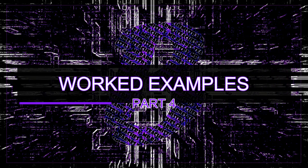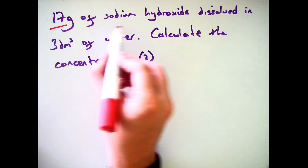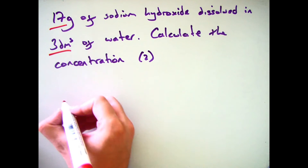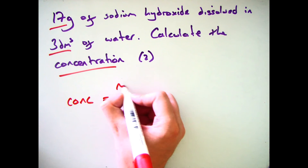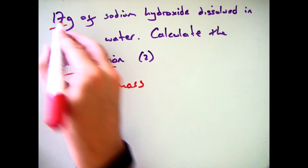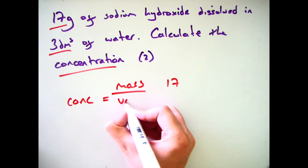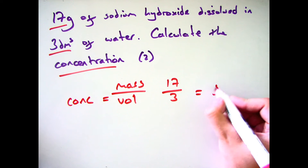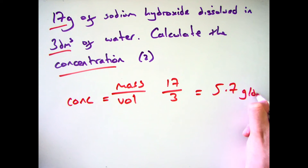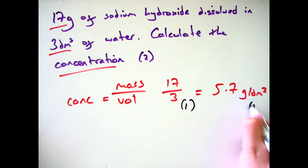Let's have a look at a worked example. 17 grams of sodium hydroxide is dissolved in 3 decimetres cubed of water — calculate the concentration. Concentration equals mass divided by volume: 17 divided by 3 gives an answer of 5.7 grams per decimetre cubed. If this is worth two marks in the exam, you get one mark for writing 17 divided by 3, and one mark for the correct answer.